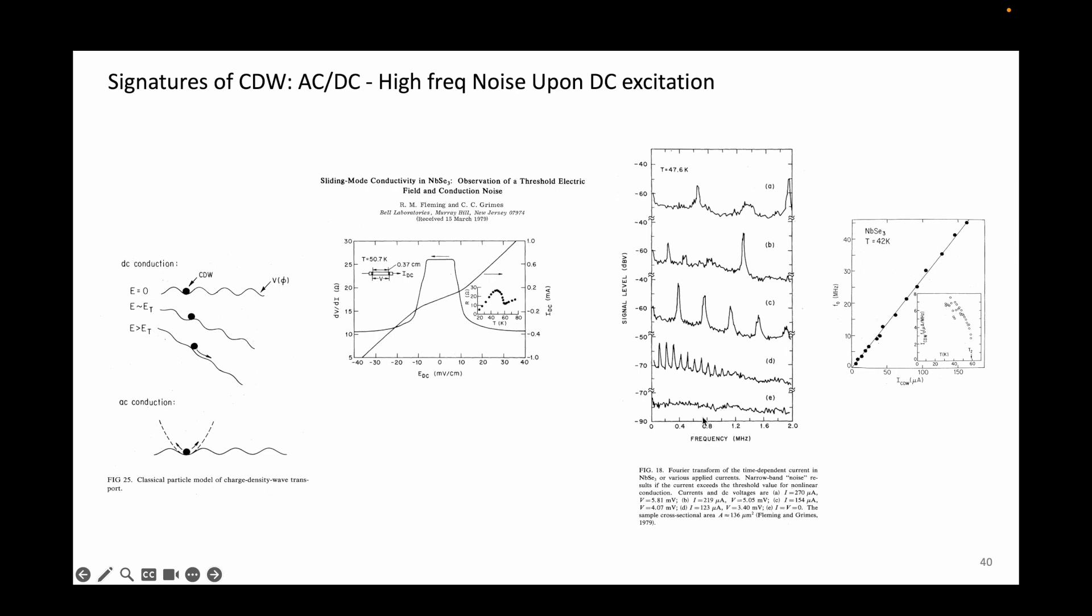It turns out that the frequency of oscillations can be tuned with the DC excitation applied to the sample. This effect can be seen below the second charge density wave state of niobium triselenide.